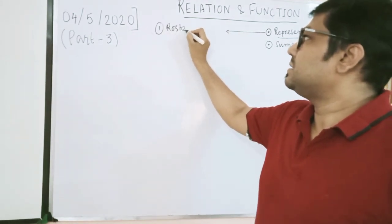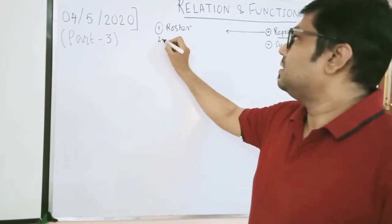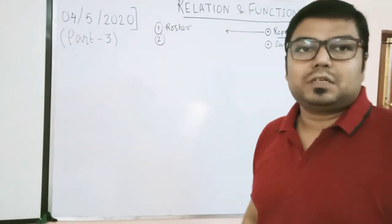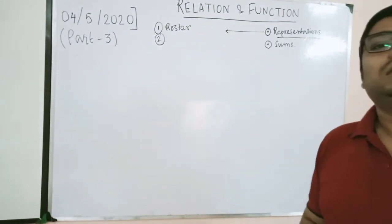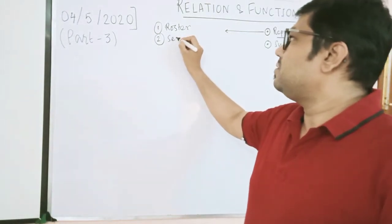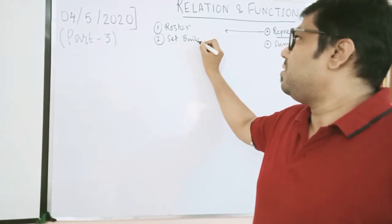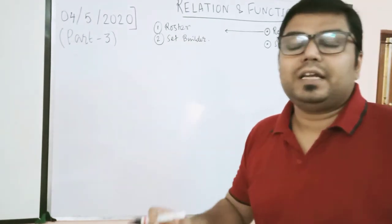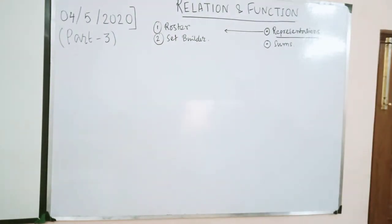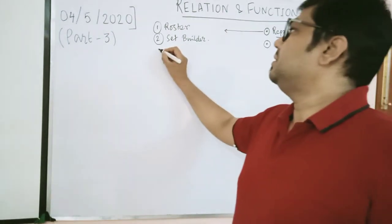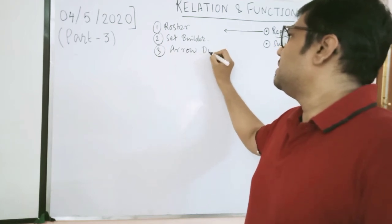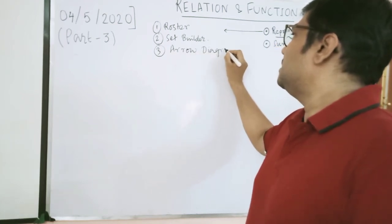Just as seats are represented in a roster, relations are also represented in roster form — that means you directly write out the ordered pairs within braces. The second is the set builder form, where we write the ordered pair as (x, y) and state the condition. The third is the arrow diagram.